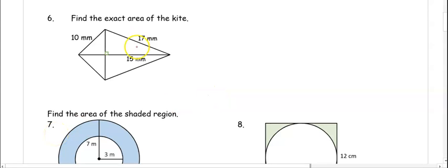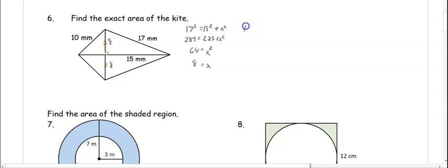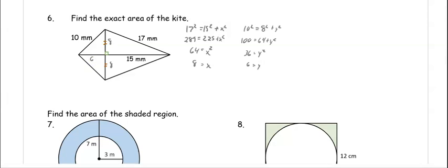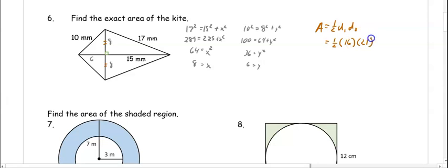Number six, find the exact area of the kite. The shorter diagonal is bisected, and we need Pythagorean theorem twice to find the missing diagonal lengths. First, using the triangle with sides 17 and 15: 289 equals 225 plus x squared, so x squared is 64 and x is 8. Then, 10 squared equals 8 squared plus y squared, so 100 equals 64 plus y squared, y squared is 36, and y is 6. Kites use the same area formula as a rhombus: one half times diagonal 1 times diagonal 2. So one half times 16 (since 8 plus 8) times 21 (since 6 plus 15) gives 168 millimeters squared.